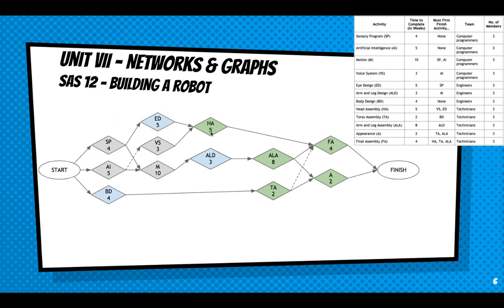So let's see. 4 and 5 is 9, and 5 is 14, and 4 is 18. So this top path is 18. Let's try 4 and 10. That's 14, and 3 is 17, and 8 is 15, and 4 is 19. Let's try the same path. 14, 17. Is that right? 14, 17, 25. That's 29. What was I thinking? 4, 14, 17, 25. I don't know why I went to 15. 29. That's a lot longer than the other one. We've got another pass, but it comes up here to 25, and then it adds 2. That's only 27. So, so far, this pathway, sensory program, motion, arm and leg design, arm and leg assembly, and final assembly is the longest.